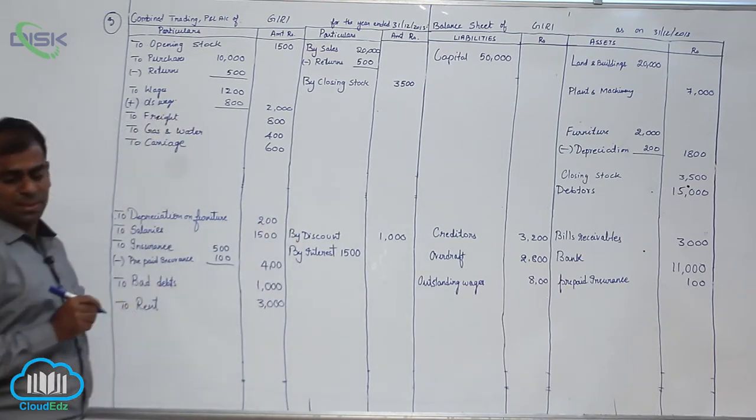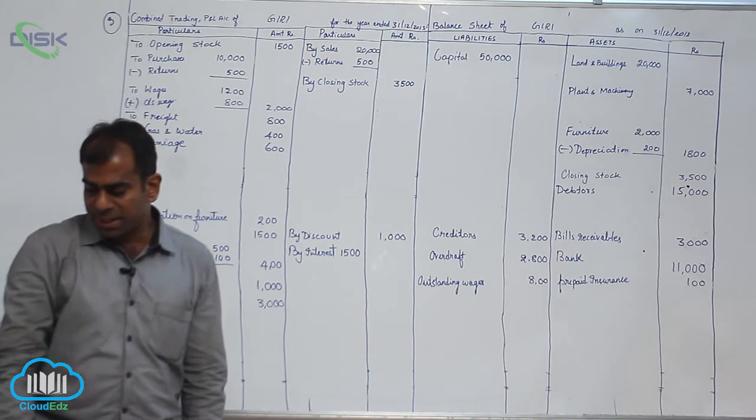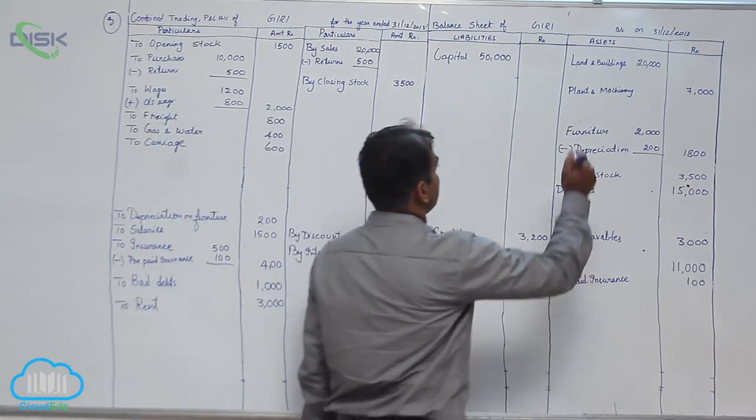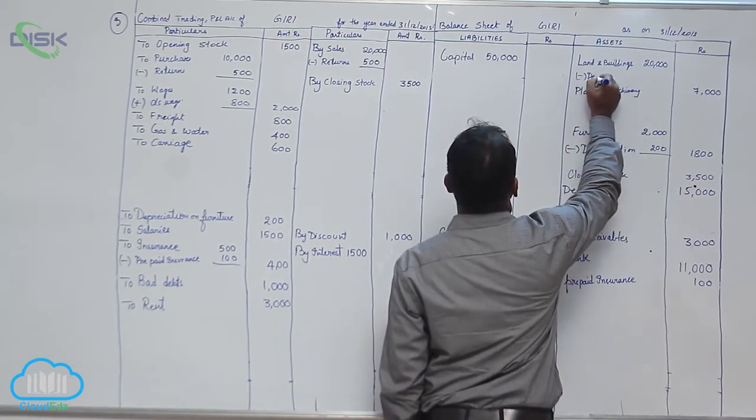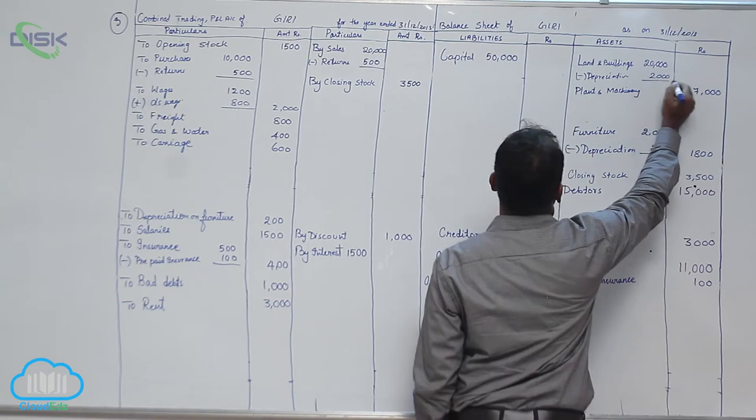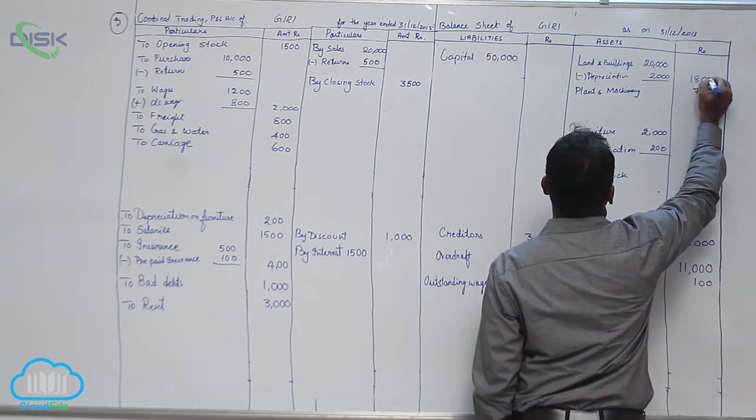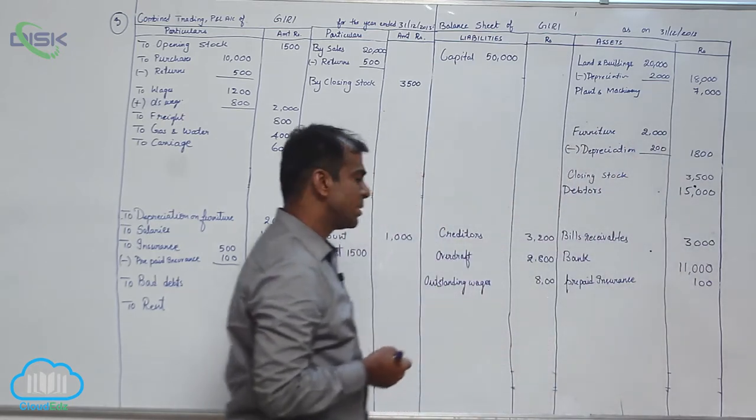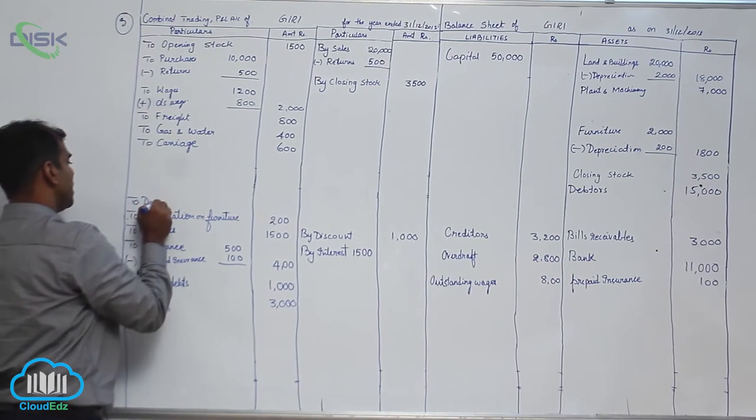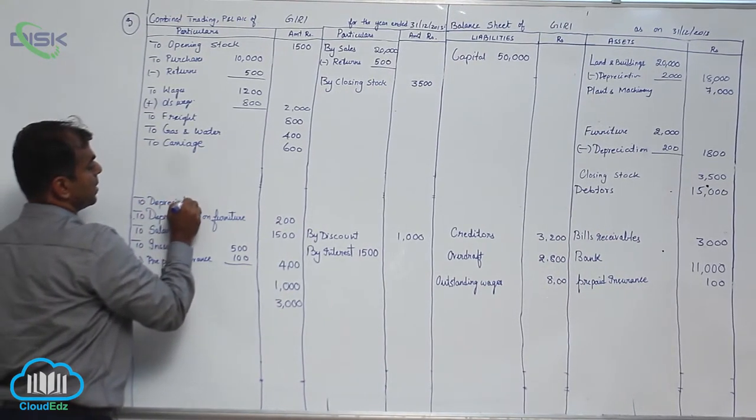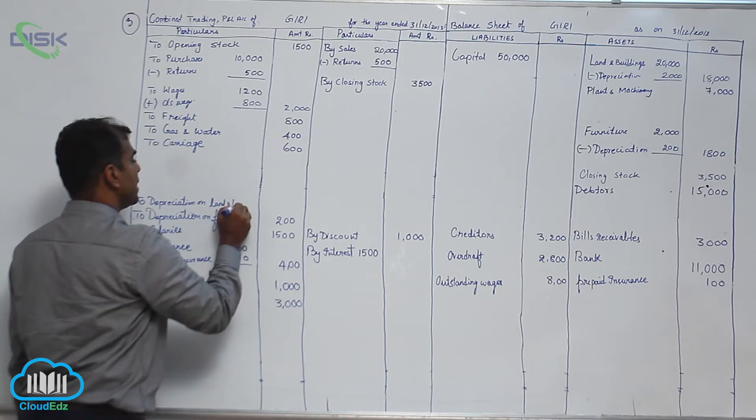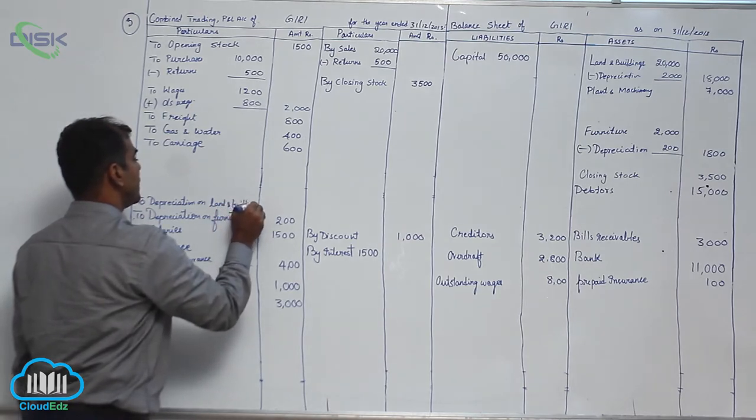The next item is depreciation on land and building, again 10 percent. In the balance sheet, minus depreciation - that makes it 2000, and ultimately your land and building value comes down to 18,000. Then depreciation is again to be written in P&L account on debit side because it is an expense - depreciation on land and building 2000.